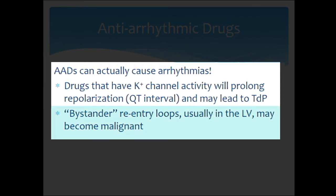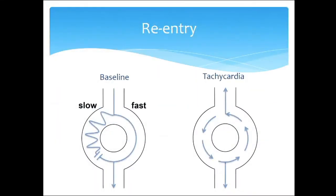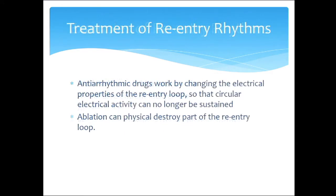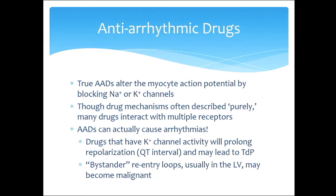There can be bystander re-entry loops, especially in the left ventricle. The great majority of ventricular tachyarrhythmias occur when the LV is suffering, scarred, and injured — riddled with these donut loops. The problem is that when you marinate the left ventricle in a poison and start changing sodium and potassium currents, you might treat the causative loop but activate other bystander loops that weren't causing a problem. That is one reason why a known side effect of antiarrhythmic drugs is arrhythmias.